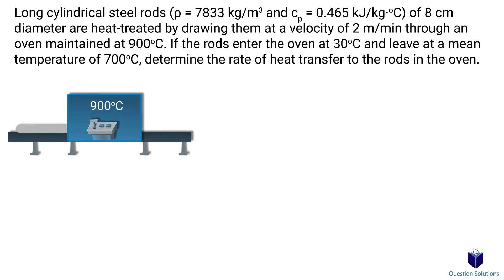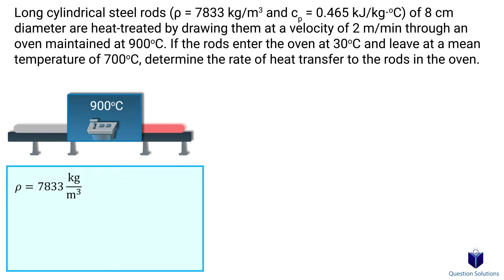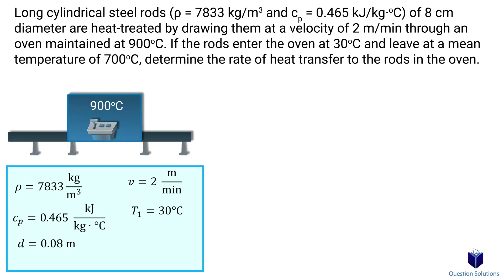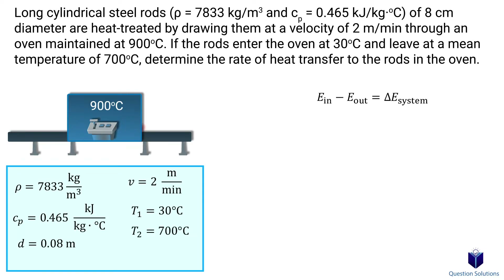In this question, we have steel rods that are entering an oven and we need to figure out the rate of heat transfer to the rods. The density of the rods is 7833 kilograms per cubic meter, the specific heat is 0.465, the diameter of the rods is 8 centimeters or 0.08 meters, and the velocity at which they travel through the oven is 2 meters per minute. The rods enter at 30 degrees Celsius and leave at 700 degrees Celsius.